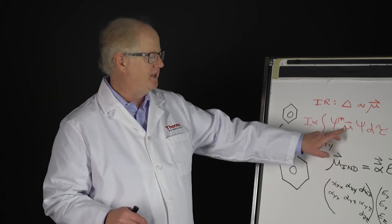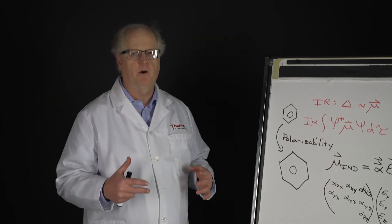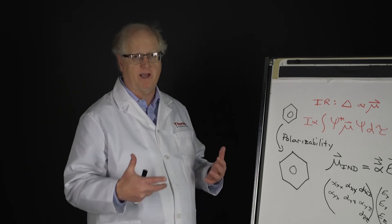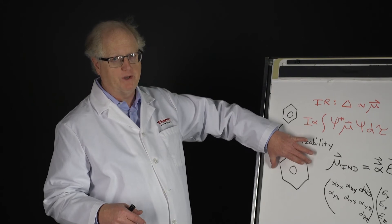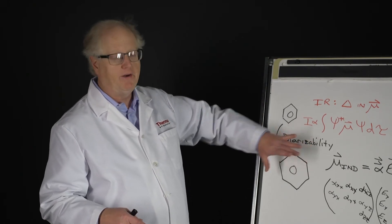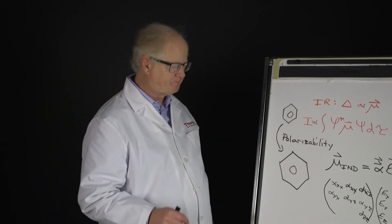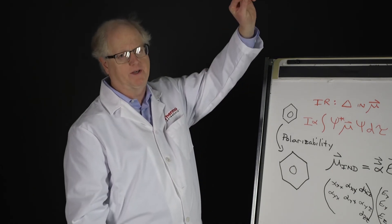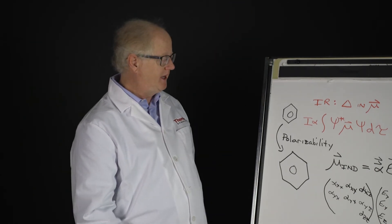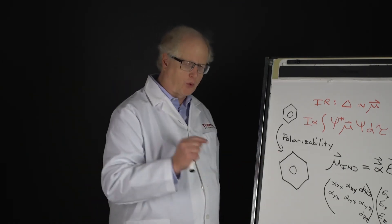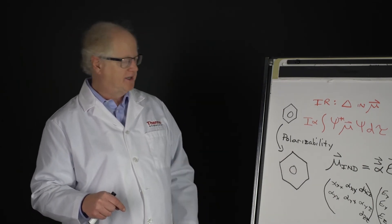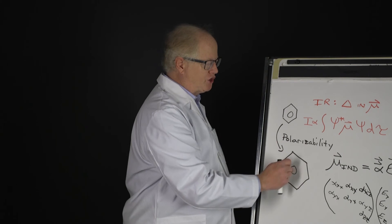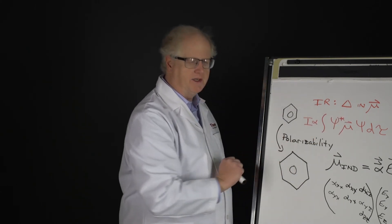This allows the molecule to express a Raman scatter signal. The ring breathing frequency, around 997 wavenumbers, is an enormous Raman peak. It was proof positive of the calculated structure of benzene - it doesn't show up in infrared but does in Raman.